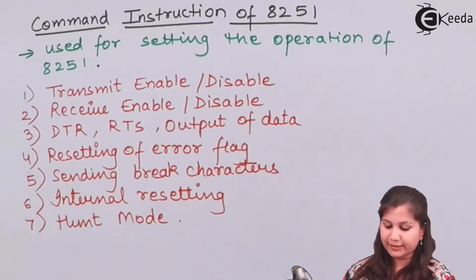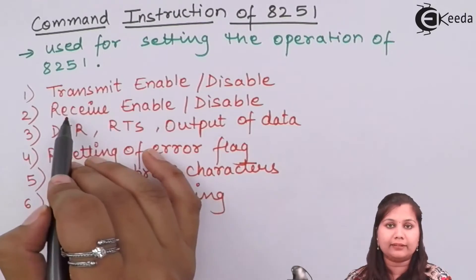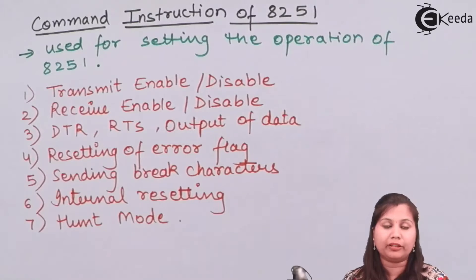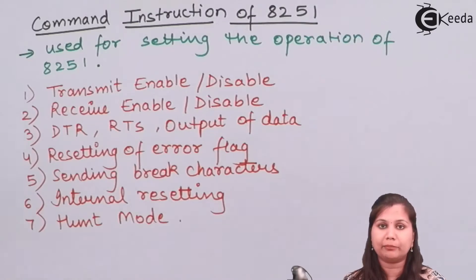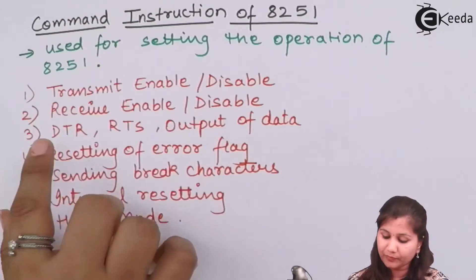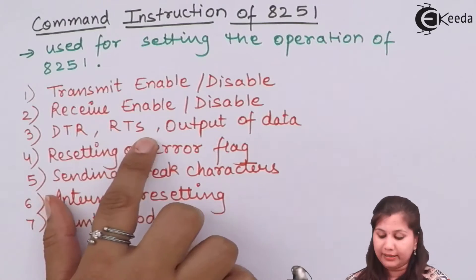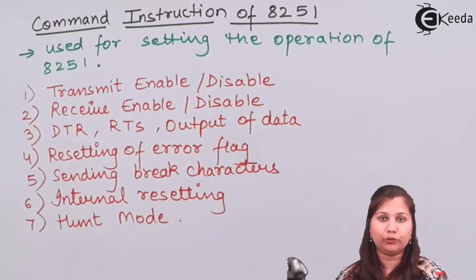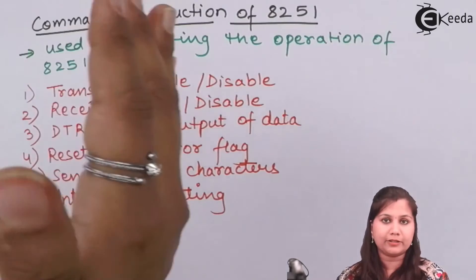The command instruction decides these factors: it is going to enable or disable the transmitter and the receiver section of the 8251, because the 8251 can both transmit and receive data. So the transmitting operation and the receiving operation can be enabled and disabled using the command instruction. Next we have data terminal ready and request to send, which are output signals from the 8251 sent to the peripheral devices, and these signals are also decided by the command instruction format.